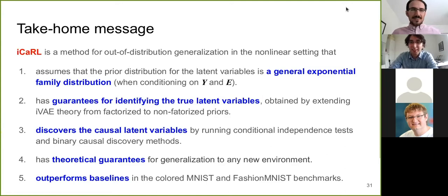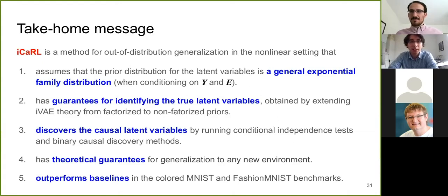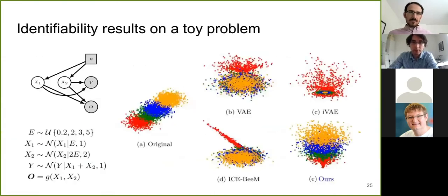Thank you — that was a great talk. Let's open the floor to questions. One question: it sounds counterintuitive that you can identify latent variables that were used to generate the data with high precision, and then identify which ones have a causal effect on the target. Can you say more about what in the generalized exponential family makes it work? The key thing is that you need additional variables on which you condition your prior — without those, there are no identifiability results.